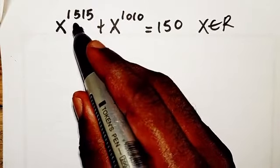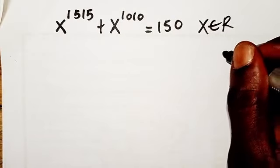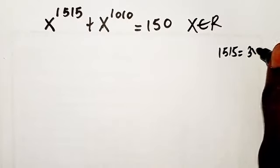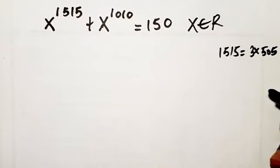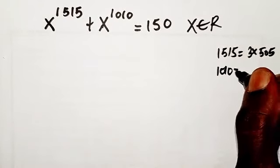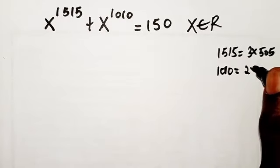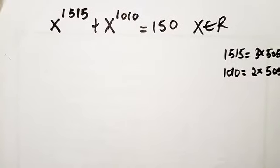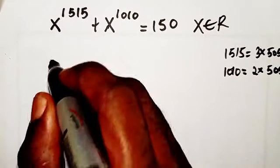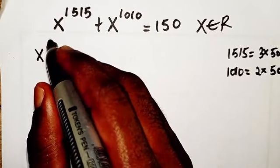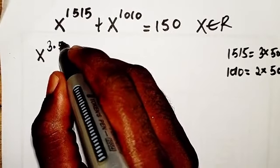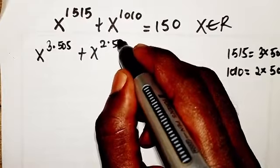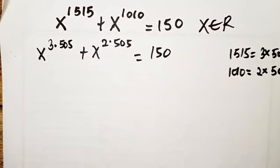Let's start from here. This equation can be rewritten by splitting the exponents: 1515 can be split as 3 times 505, and 1010 can be split as 2 times 505. You can see they have something in common, so we rewrite the equation as x to the power 3×505 plus x to the power 2×505 equals 150.